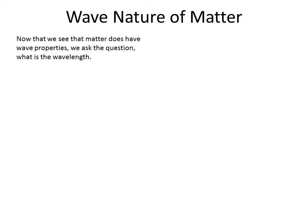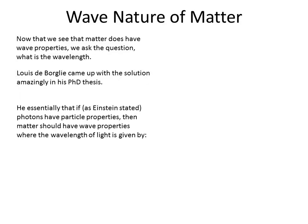But we can ask the next question: if it's a wave, what's its wavelength? Louis de Broglie came up with a solution in his PhD thesis at a pretty young age — smart guy, smart physics. He essentially took what Einstein did and said that because photons have particle properties, then matter should also have wave properties. This led him to the formula: the wavelength of matter — we call this the de Broglie wavelength — is equal to Planck's constant divided by the momentum.